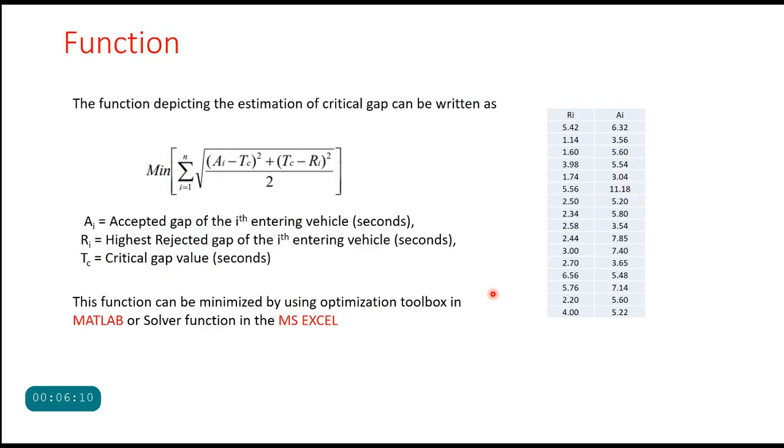Now this function can be written like this: you minimize the square root of difference between Ai and Tc and difference between Tc and Ri, that is the average difference, that is the average of square of differences.